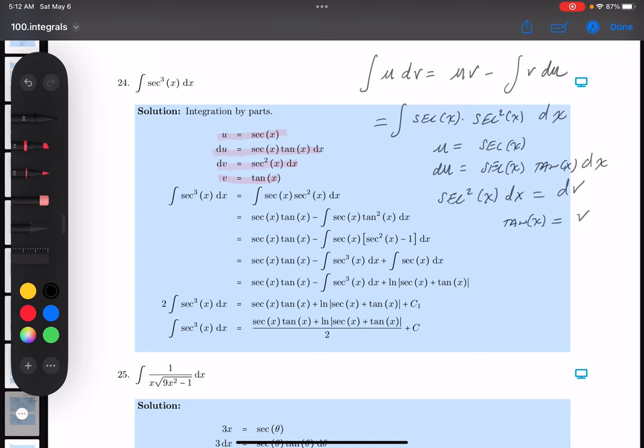Would equal the v, the reason for that, the derivative of tangent is secant squared. Let's go back over here, write this down now. So you get secant tan, that's the uv part, minus, now we're going to do the v du, so it's going to be tan x. And the du is secant tangent, so I just say tangent squared secant x.